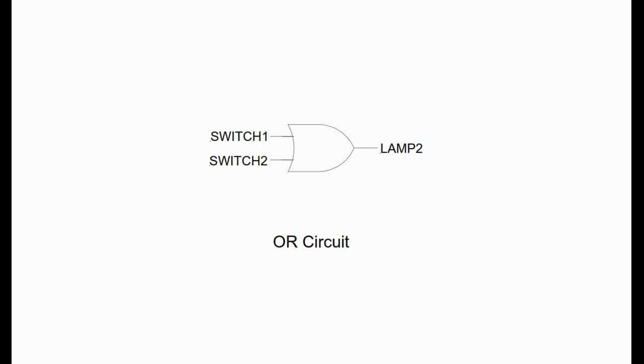Some designers prefer to place dashed lines between the two PB1 switches and another between the two PB2 switches to clarify that they are operated by the same switch actuator. In this case, the actuator is a push button.